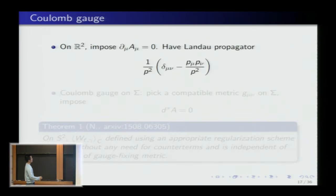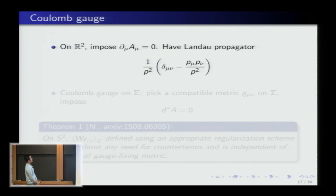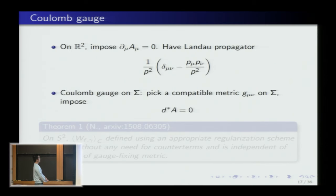Coulomb gauge is the most natural gauge geometrically. On R², you impose the condition D*A = 0, killing the longitudinal modes of the gauge field. The propagator is the so-called Landau propagator: the inverse Laplacian minus the longitudinal projection. On a surface, you need to pick a metric to define D* — the adjoint of D — and impose that as your Coulomb gauge condition, restricting to the subspace where D*A = 0.